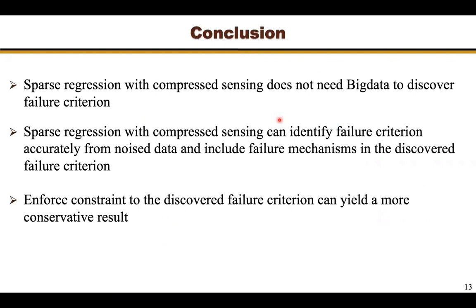With these results, I can conclude the presentation. First, sparse regression with compressed sensing does not need big data to discover failure criterion, which fits the current failure data size constraint and can identify the most important candidate functions that govern data. Second, sparse regression with compressed sensing can identify the failure criterion accurately from noisy data, and the discovered criterion can also include failure mechanisms. Finally, we demonstrated that enforcing constraints to the discovered failure criterion can yield a more conservative result, satisfying the needs to directly use the discovered failure criterion in the design of a composite structure. Thank you for listening, and I'll take your questions.